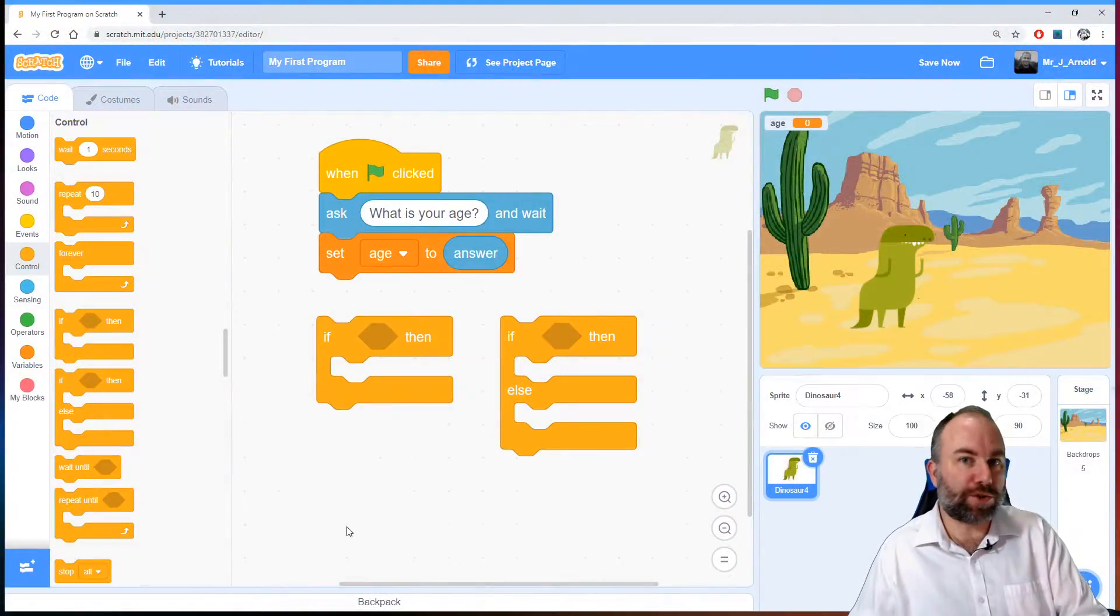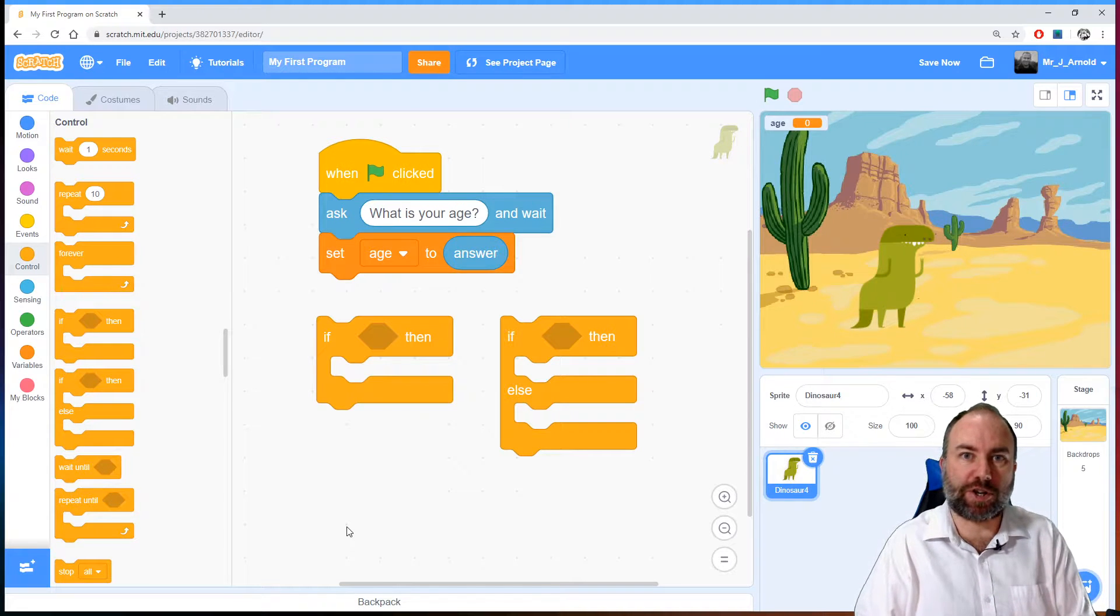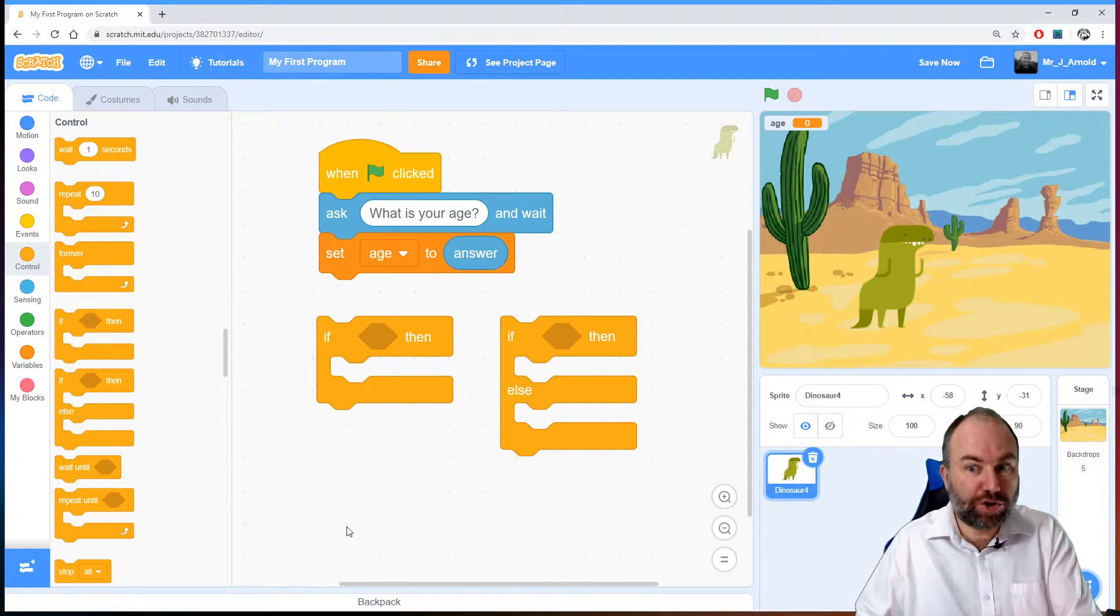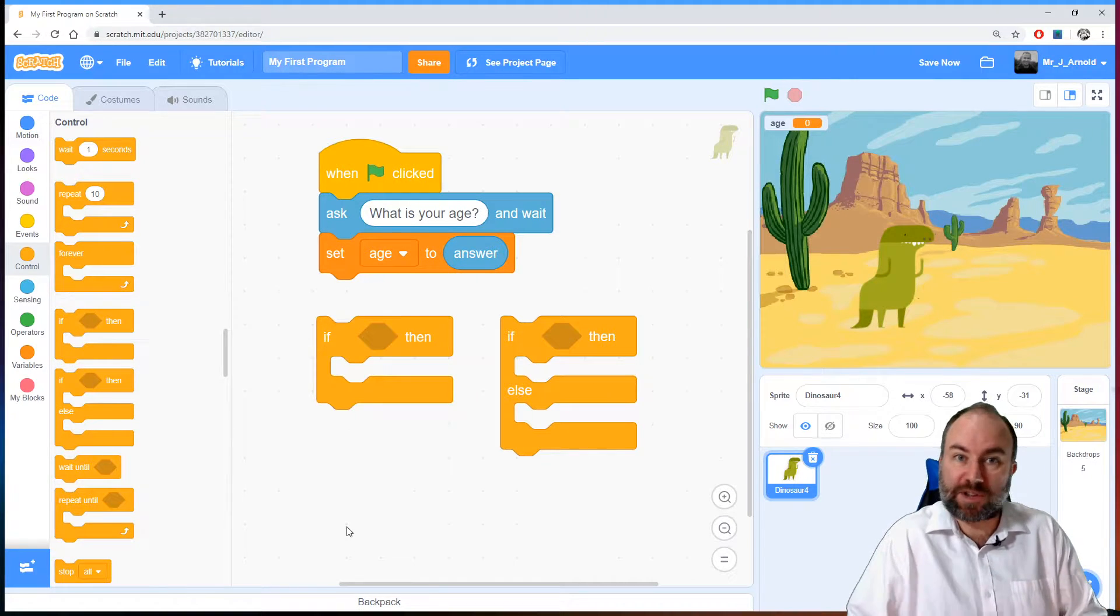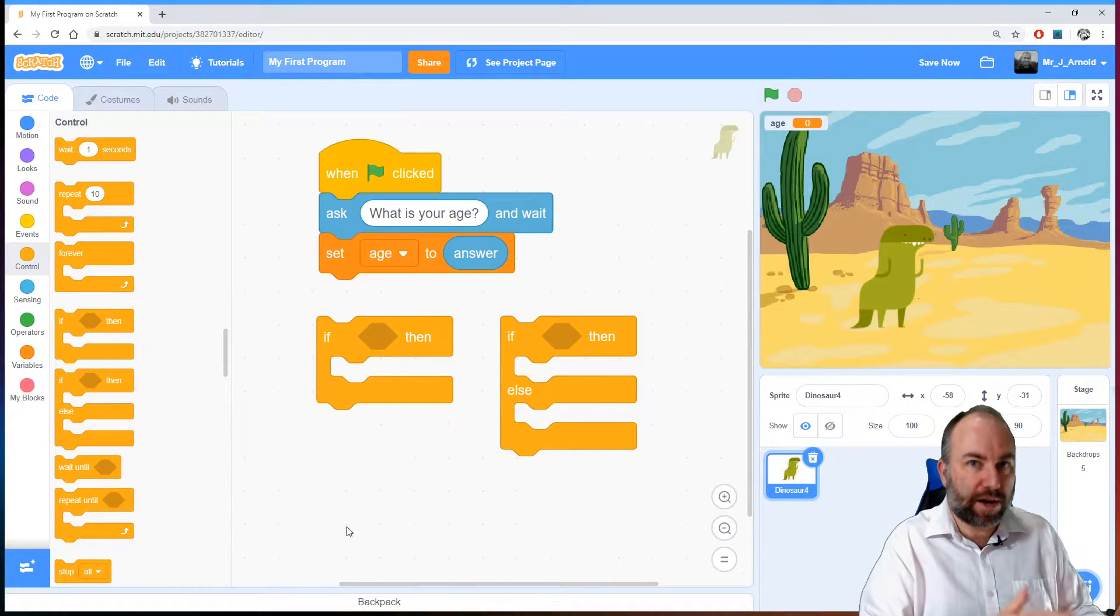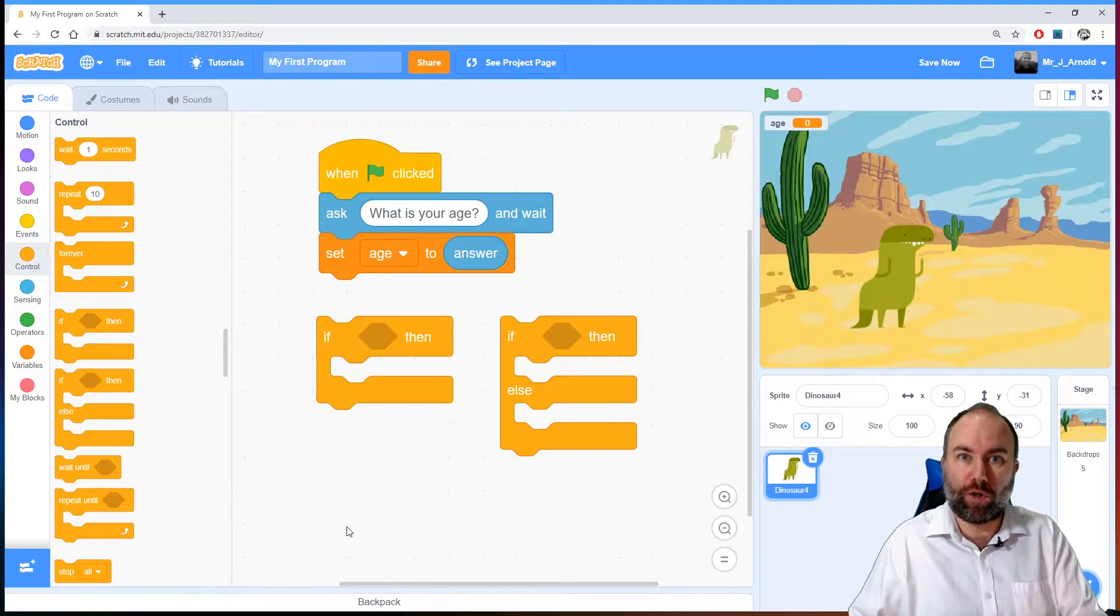But with the block on the right hand side we've got an option here. If this is the case then do this action. Otherwise do a different action. So something will happen. Something will always happen. It'll either be the first action or the second action.